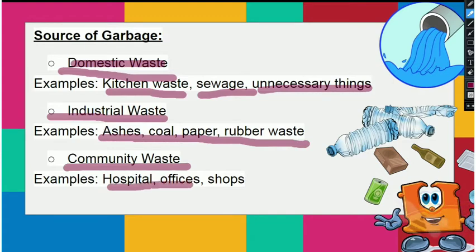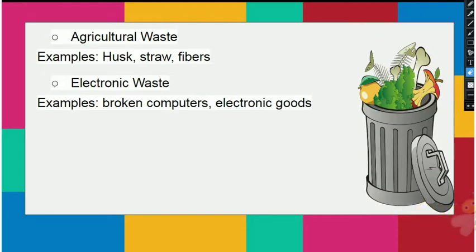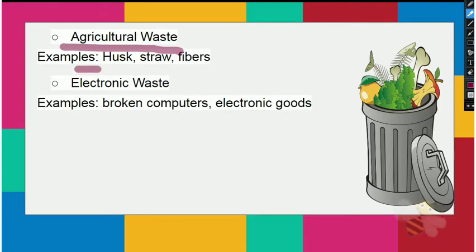The third source is community waste, produced by hospitals, offices, and shops — including syringes, office papers, etc. The fourth source is agricultural waste, such as husk, straw, and fiber.